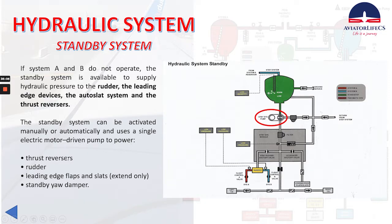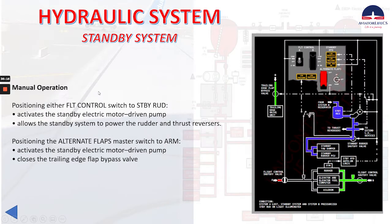The standby system powers the thrust reversers, rudder, leading edge flaps and slats extend only, and the standby yaw damper. For manual operation, positioning either flight control switch to standby rudder activates the standby electric motor driven pump and allows the standby system to power the rudder and thrust reversers.